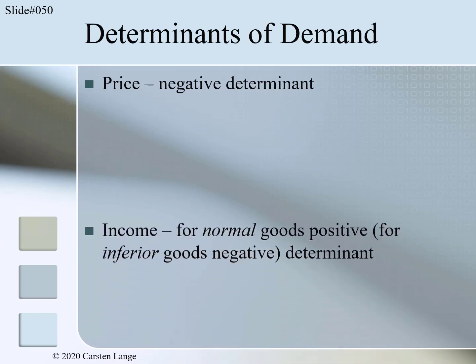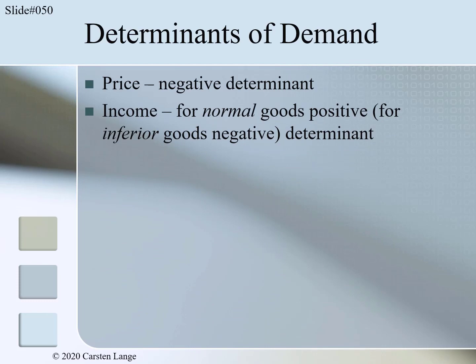Second, income. For normal goods, income is a positive determinant of demand. Using the demand for visits to nice restaurants as an example: the higher a person's income, the more nice restaurant dinners the person would demand. Goods where the income effect is positive are called normal goods. There are exceptions where the income effect is negative — we call these inferior goods, which we will introduce on the next slide.